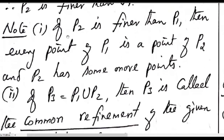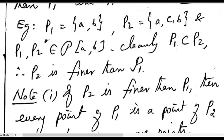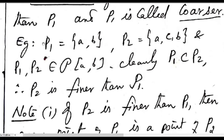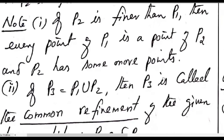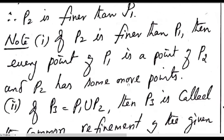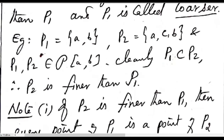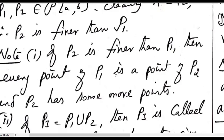If P2 is finer than P1, then every point of P1 is a point of P2. P2 has some additional points — in this example, P2 has one extra point, namely c, compared to P1.